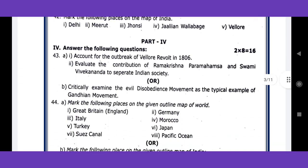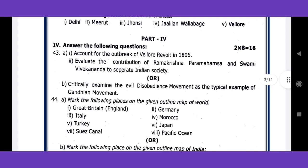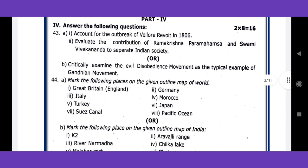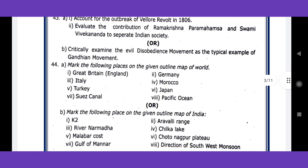Next, part 4 — the 8-mark questions. Question 43: outbreak of the revolt of 1857 — most important question. Question on Ramakrishna Paramahamsa and Swami Vivekananda's contribution to reforming Indian society. The critical exam question is the Civil Disobedience Movement — that is Gandhi's mass movement — and a comparison lesson.